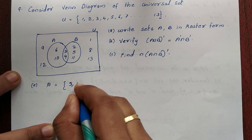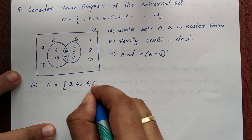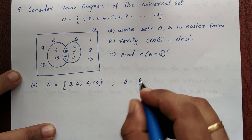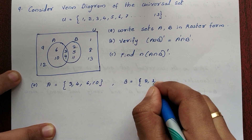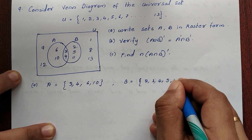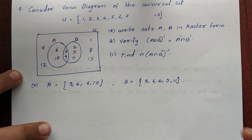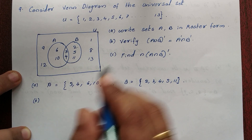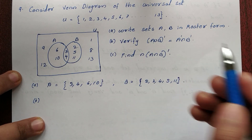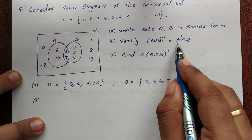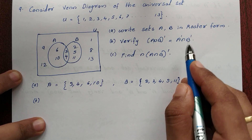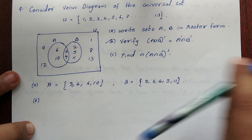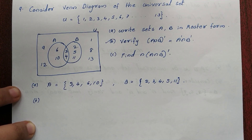From the Venn diagram, A has elements 3, 4, 6, 10, and B has elements 2, 3, 4, 5, 11. These are the roster forms of A and B. For the second question, we verify De Morgan's law: (A ∪ B)' = A' ∩ B'. This is a 4 marks question.